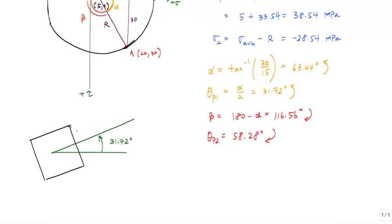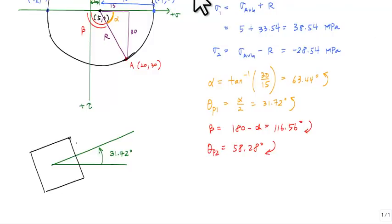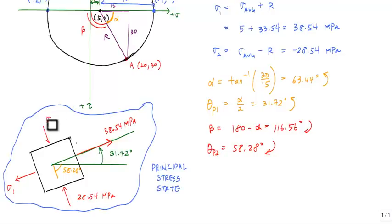This 31.72 degrees is associated with sigma 1, which is positive 38.54, indicating that I have tension of 38.54 megapascals. This 58.28 degrees represents this line here. On that face, I have sigma 2, which is negative 28.54, meaning I have a normal stress causing compression on this face, 28.54 megapascals. Notice I didn't write a negative sign in front and draw the arrow in. The number indicates the magnitude and the arrow indicates the direction. This is my principal stress state.